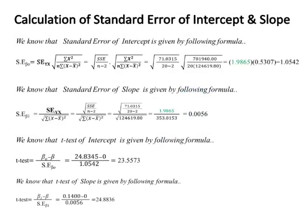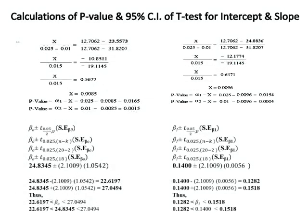Calculations of standard error for intercept and slope, P-values, and 95% confidence intervals for the T-test: the P-value of T-test for intercept is 0.0015, which is significant at 5%. The P-value for slope is 0.0004, also significant at 5%. The 95% confidence intervals for both intercept and slope are computed, and both values fall within their respective ranges. Results are significant.